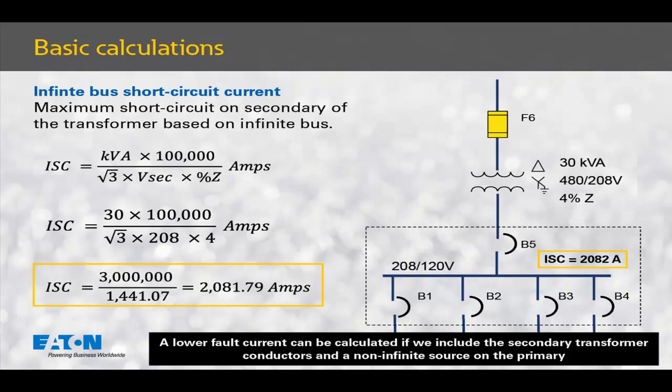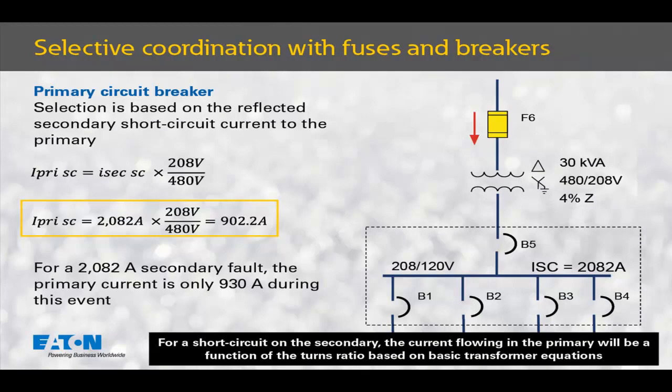If you change any of those two parameters, the numbers will be different. We're approaching this as a worst-case scenario, as we don't want to have to make changes after the fact. To obtain the current that the primary fuse will see during a short circuit event on the secondary — calculated to be 2,082 amps — we have to reflect that value to the primary based on the turns ratio of the transformer. I multiply 2,082 amps by 208 secondary volts divided by 480 primary volts. This shows us that the primary current flowing during that event will only be 902.2 amps, which we round up to 903 amps.